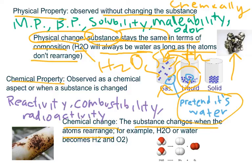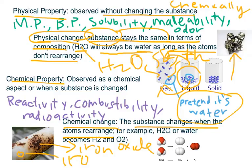Now let's look at a chemical change. What happens if I left a piece of iron outside and left it to rest? Well, the iron will turn into iron oxide when exposed to oxygen outside. We call this a chemical change because we are turning iron into iron oxide, and these two are different substances. Because these are different substances, we have a chemical change, since a chemical change occurs when the substance changes. Our substance went from iron to iron oxide, so it changed — therefore it's a chemical change.